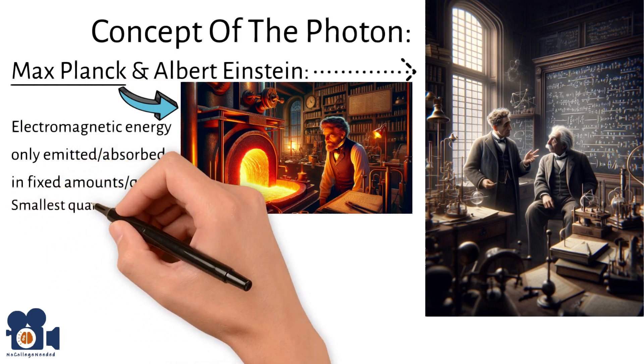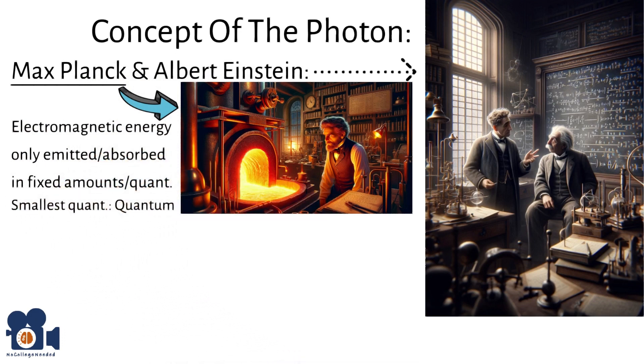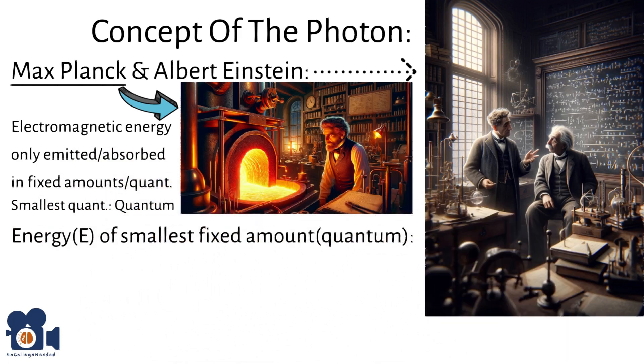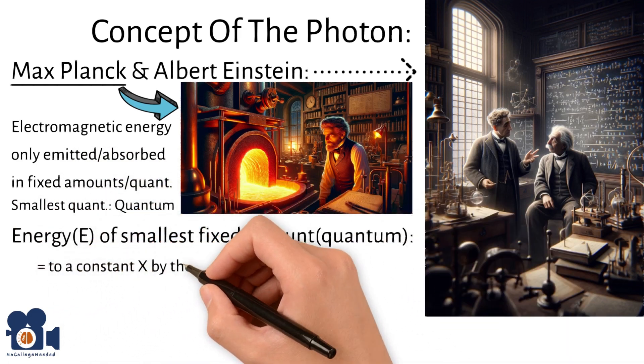He gave the smallest quantity of it the term quantum. Planck proposed that the energy E of the smallest fixed amount, quantum, was equal to a constant multiplied by the frequency, nu, of the radiation.